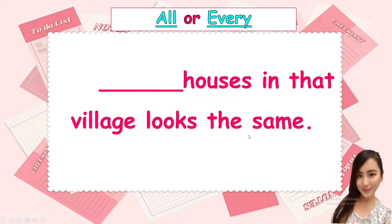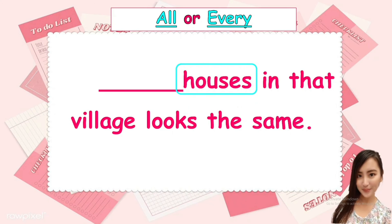Next. All or every. Blank houses in that village look the same. Houses. All or every? Houses is plural. The answer is all. All houses in that village look the same.